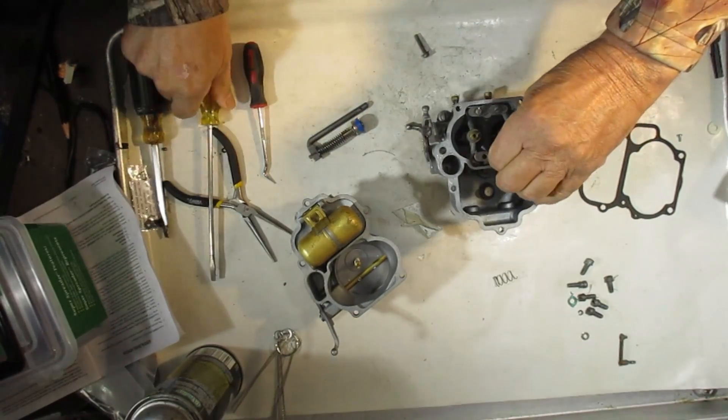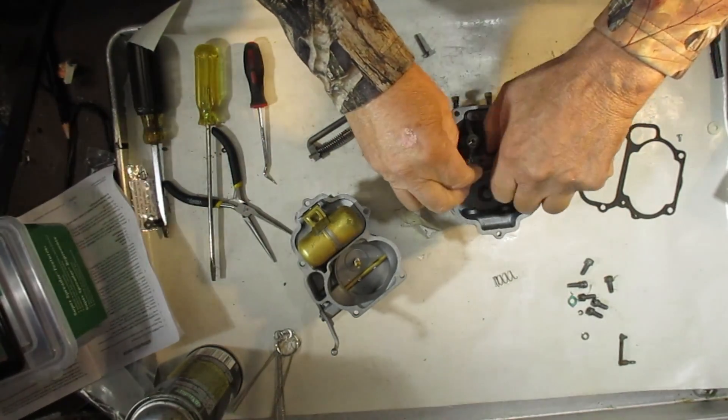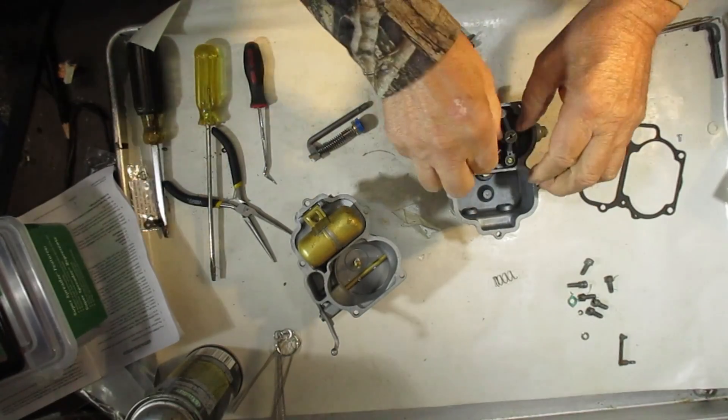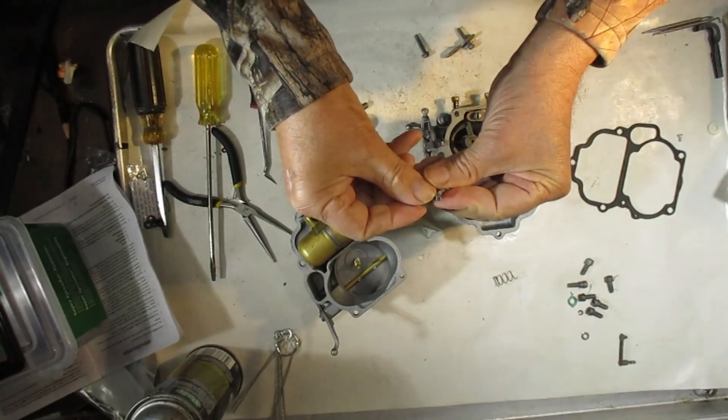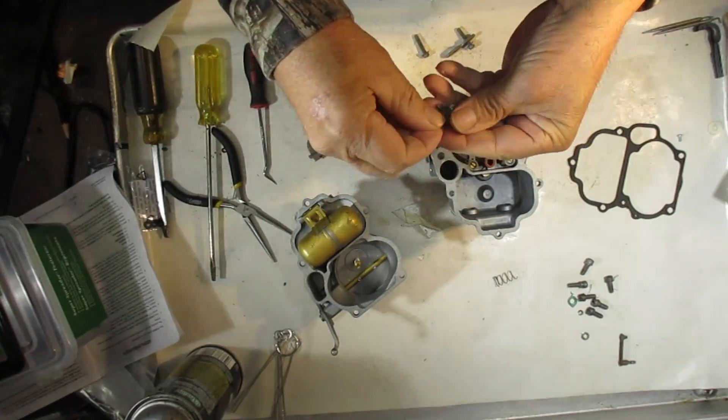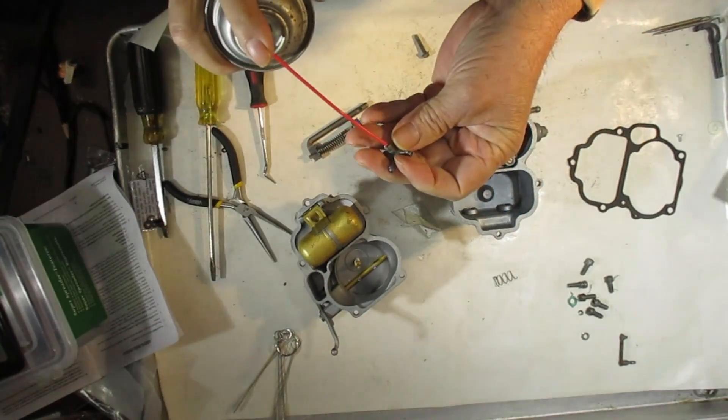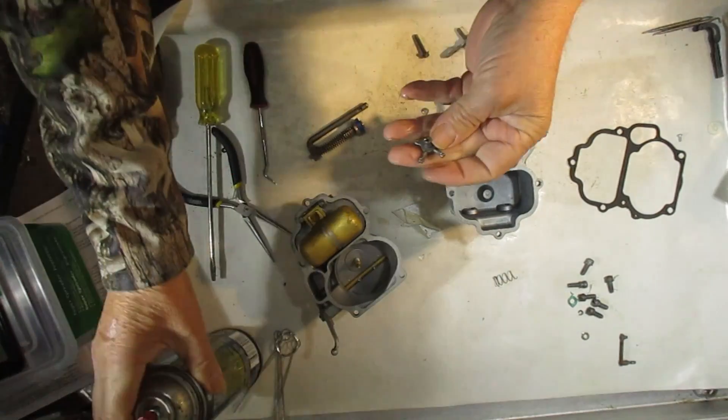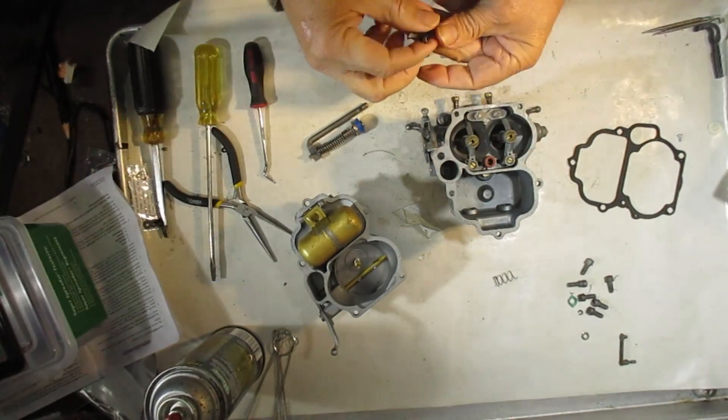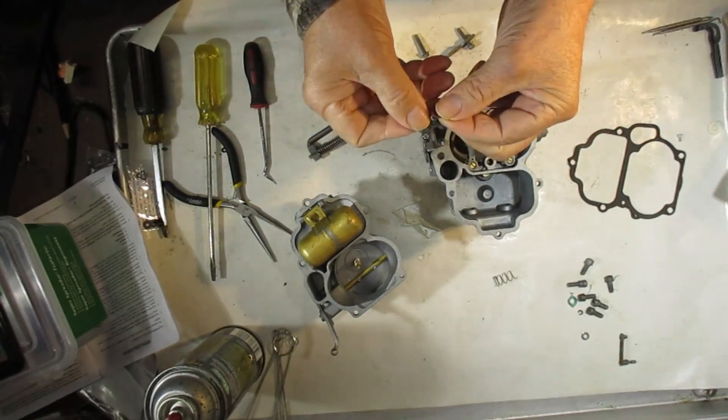Some of these passageways are very small, so when you're cleaning your carburetors, pay special attention to it. Just soaking the carburetor doesn't always do it. You can see how small that hole is right there. What I do a lot of times is spray carburetor cleaner through it and see if it sprays through. That helps clean it.